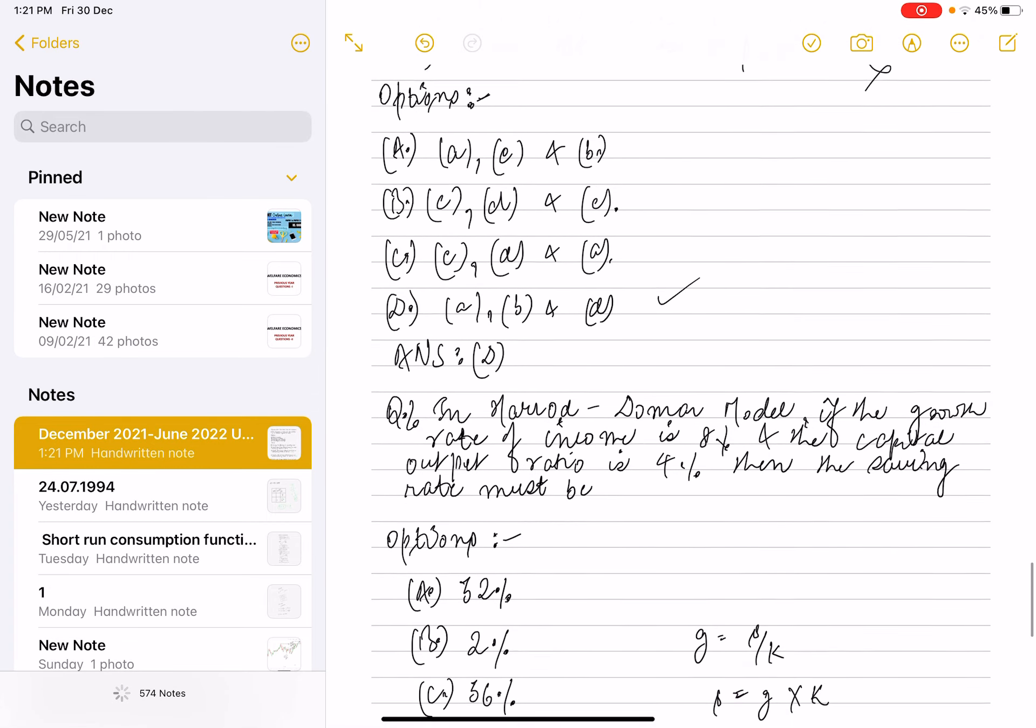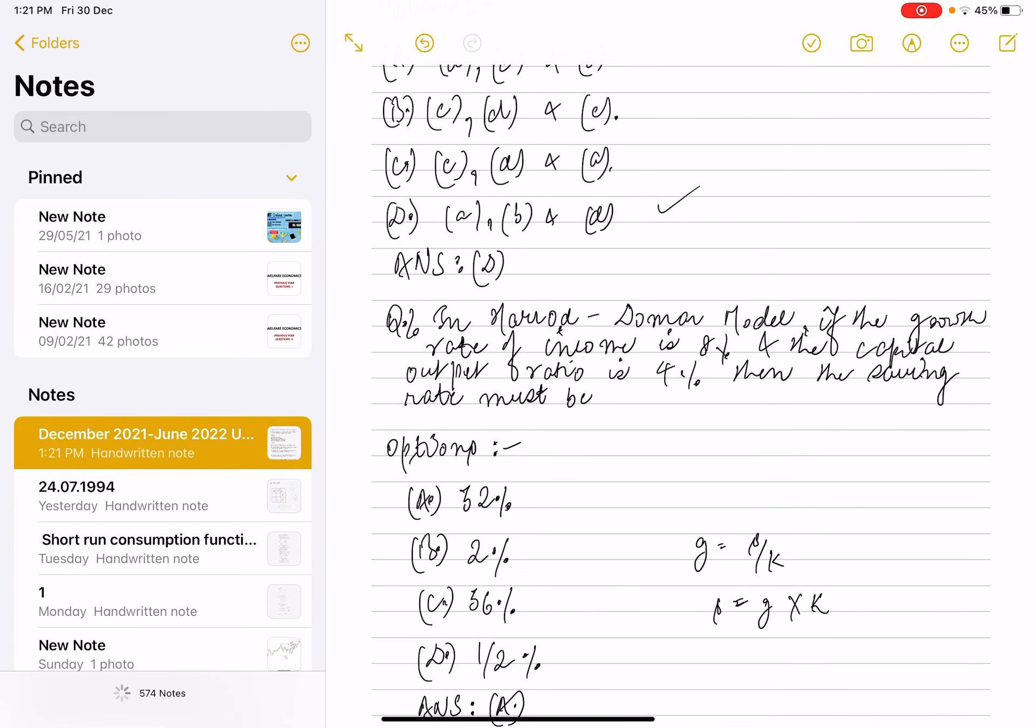Next question is: under the Harrod-Domar model, if the growth rate of income is 8 percent and capital output ratio...